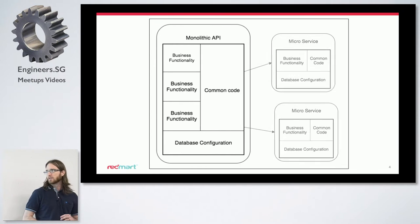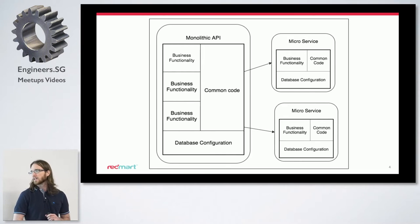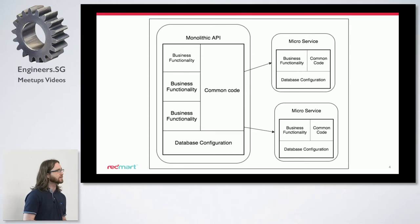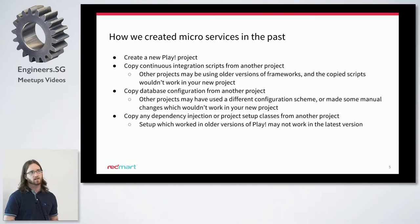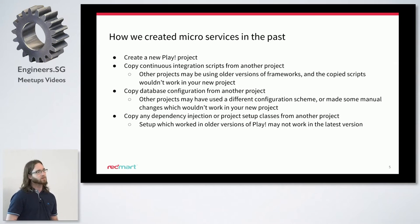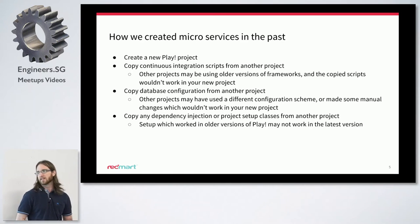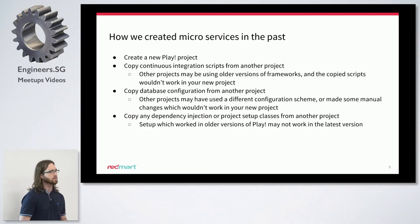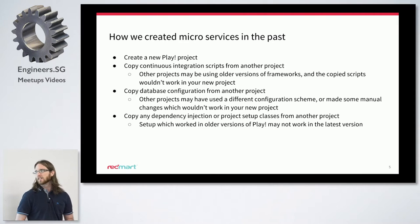So we did our best to split up a couple pieces of the business functionality into their own services. When we did this, we noticed we were able to isolate the business functionality pretty well. There was a little bit of duplicated common code, and the database configuration and server setup was duplicated as well. The way we created these first microservices was a little tedious and a little error-prone. We had to first manually create a new Play project and then find a working service and copy the continuous integration setup as well as the database configuration and other server setup files. This was problematic because there could be older versions of frameworks in use and the configuration values would be in the wrong format or the wrong naming schema.